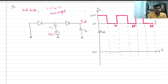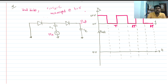At t equals zero, we have Vin with this waveform. The peak value of the wave is 10 volts and the lowest value of Vin is zero volts. For this capacitor circuit we need initial conditions, which are given: VC1 and VC2 equal zero volts. These are ideal diodes, meaning there is no cut-in voltage — the cut-in voltage is zero volts.